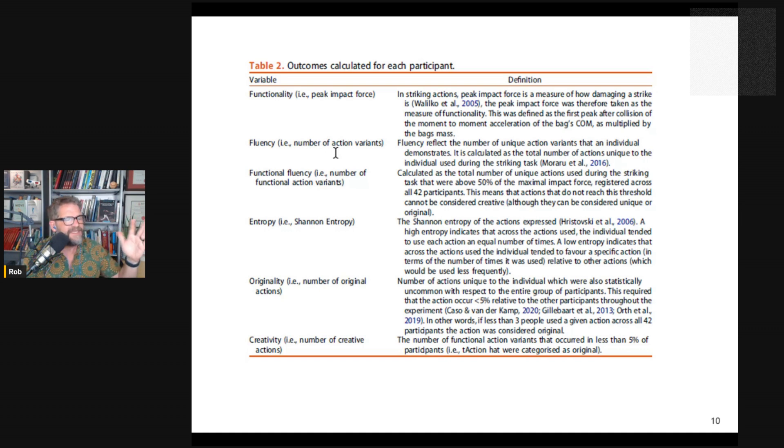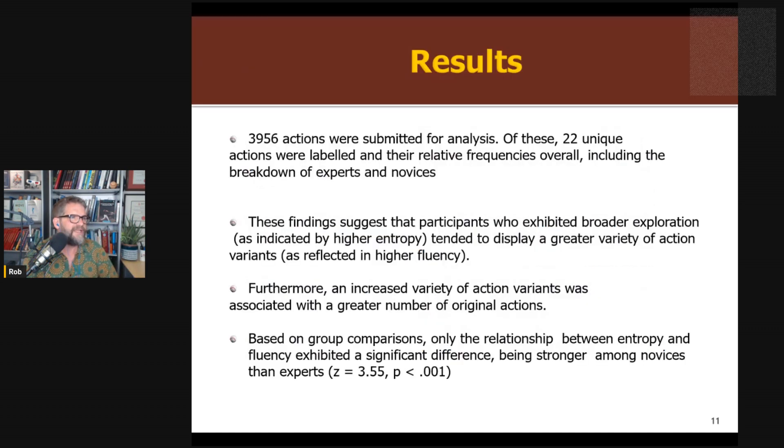What did they find? They looked at almost 4,000 of these actions. So that's a lot of work. They identified 22 different ones in the paper. You can look at what these were: right hook, left hook. As I mentioned, they looked at the overall frequencies to identify originality. They found some relationship between the different measures. So participants who had broader exploration, which is measured by entropy—high entropy means what you do now is less predictable from what happened before, that means you're exploring more—they had higher fluency. Increased variety of actions was associated with more original actions. This is an important point that I'll talk about at the end, but I'll say it here.